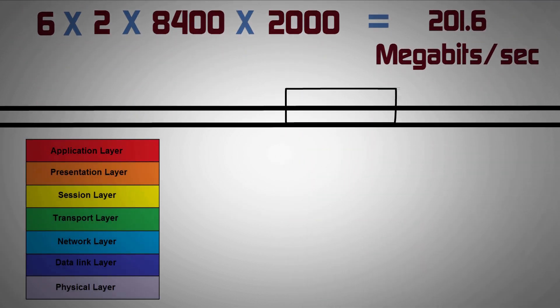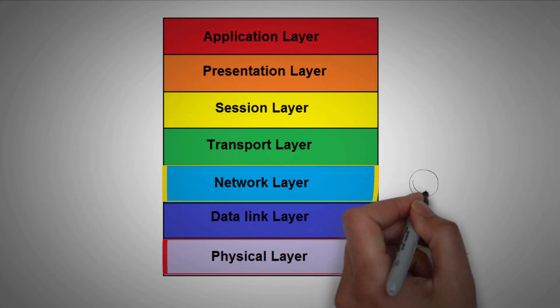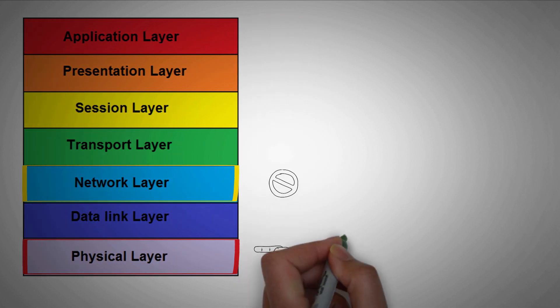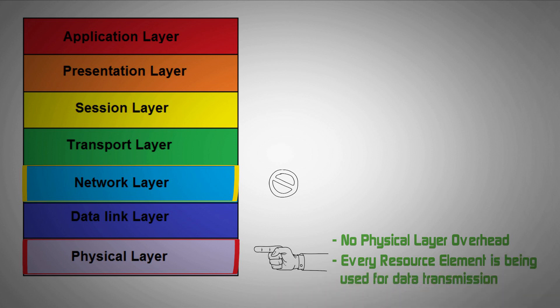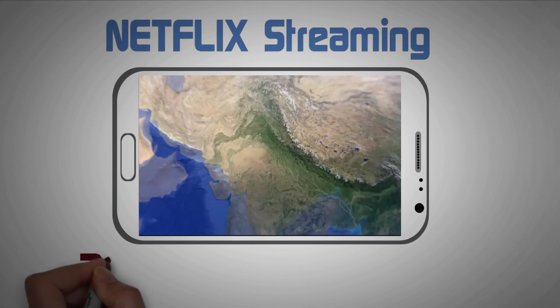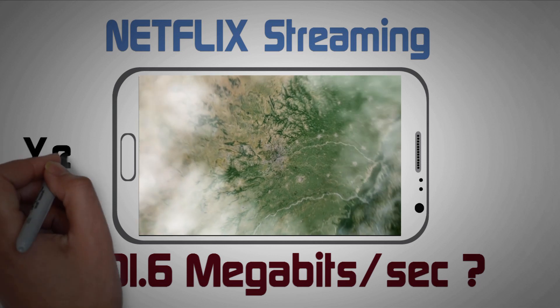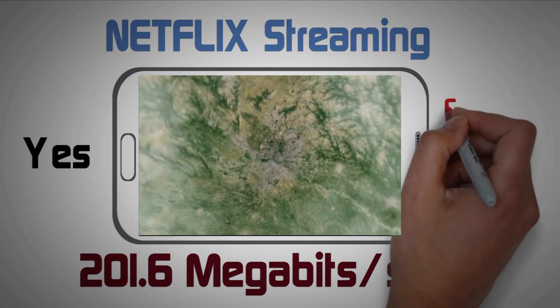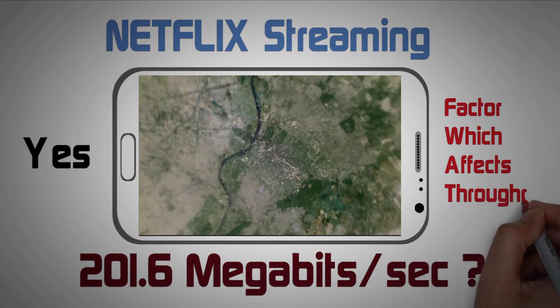This ideal throughput is based on physical layer operation and not on upper layers such as IP layer. Also we've assumed there is no physical layer overhead, that every resource element is being used for user data transmission. Now if we want to stream something on Netflix, can we expect this much data throughput? Simple answer would be yes, but in reality we have to consider several other factors which affect the throughput significantly.